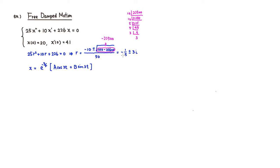Then let's find the value of a and b using the initial value conditions. We plug in t equals 0: e to the 0 is 1, cosine of 0 is 1, so it reduces to just a. Sine of 0 is 0. Since this equals 20, we know that a is 20.